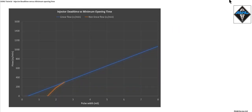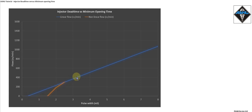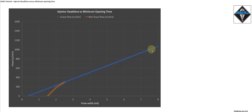Hopefully you've been watching some of our earlier videos where we were talking about dead time. On this graph we can see that the dead time is about 0.4 milliseconds, and as we increase the pulse width the flow increases proportionally to the pulse width increase.